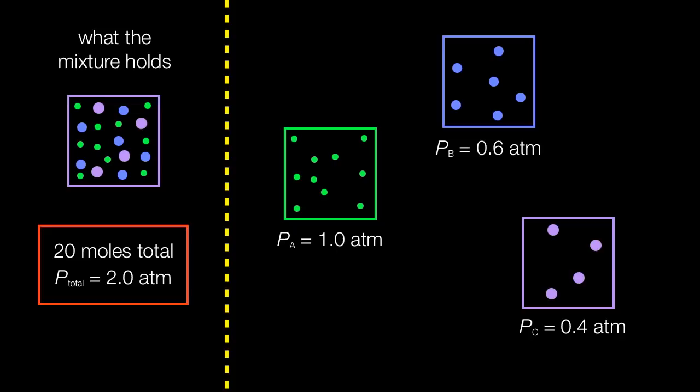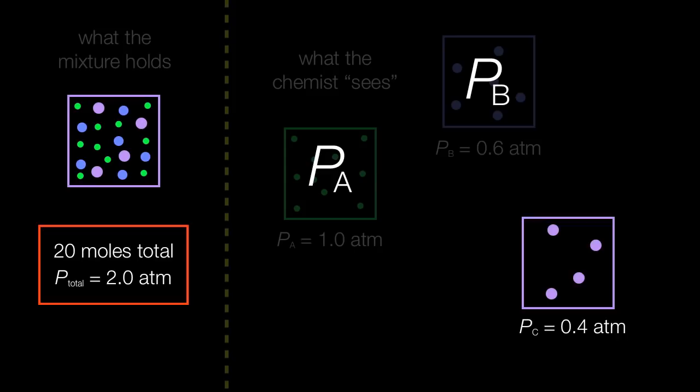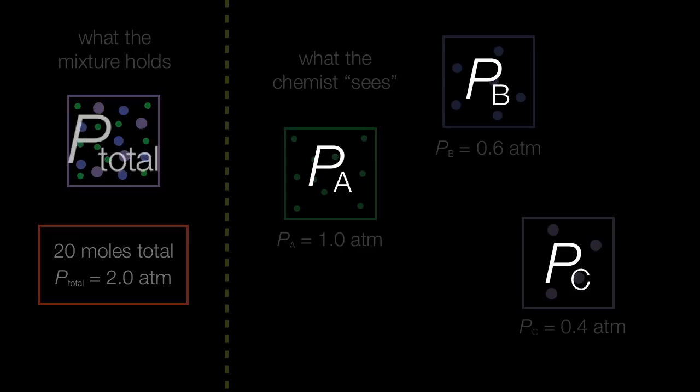On the left is what the mixture holds. We just count number of moles. We don't care what they are. But on the right is more of the way a chemist sees things when looking at a mixture. We really see it as the three separate partial pressures that combine to give the total pressures. That's exactly what Dalton's Law is all about. So the way I see this is partial pressure of A, the partial pressure of B, and the partial pressure of C all combine to give the overall total pressure in the mixture.